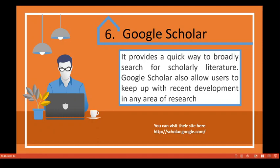Google Scholar allows users to keep up with recent developments in any area of research. Regardless of your research domain, you can search for journal articles and conference proceedings for free — many are available at no cost. You can also upload your own research so others can access it and see the number of citations your work has received.